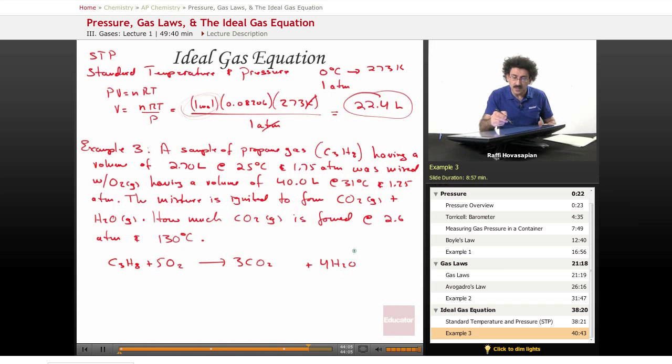Given these gaseous conditions, I'm going to use the ideal gas law to find out the number of moles of each. This is a limiting reactant problem. I need to find out which is the limiting reactant in order to find out how much CO2 is going to form.